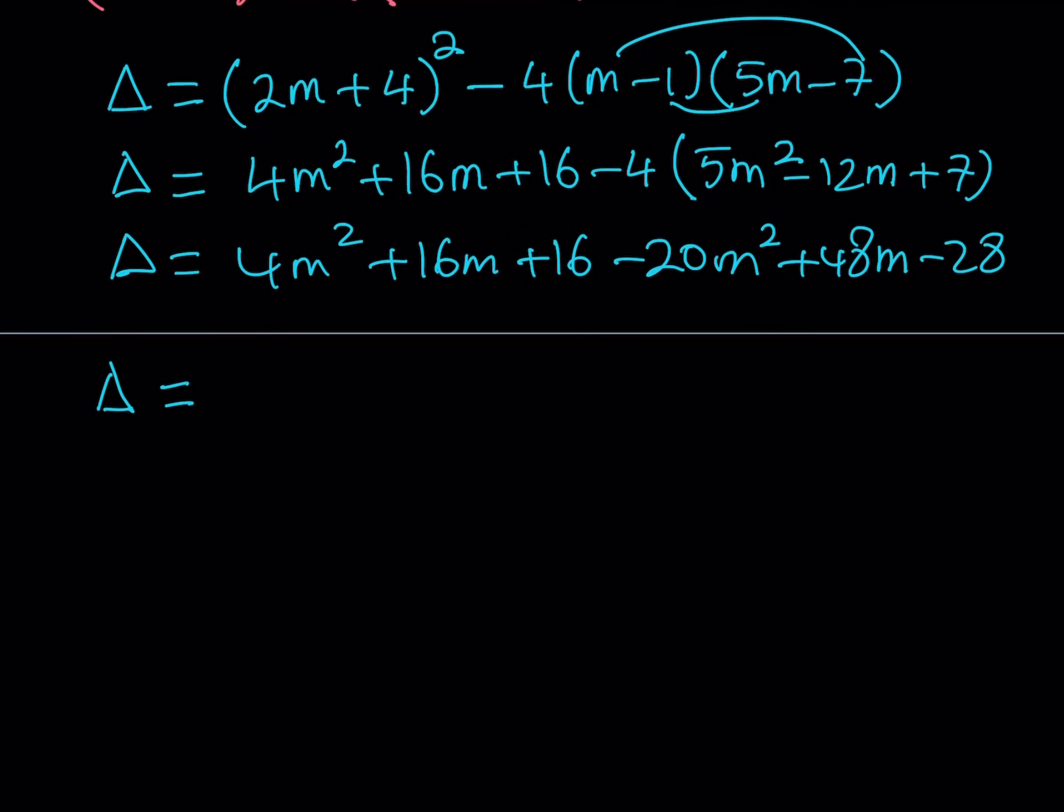4m squared minus 20m squared is negative 16m squared here. And then 16m plus 48m, that should give me 64m. And finally, 16 minus 28 should be negative 12.